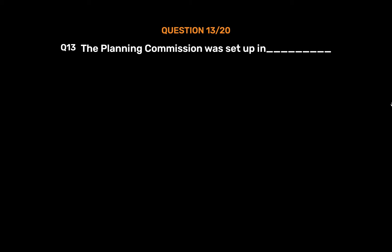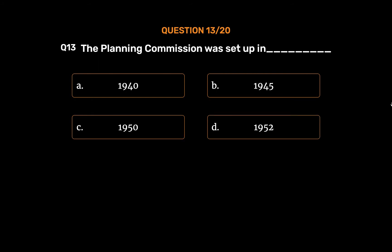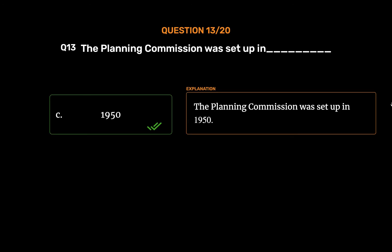Question 13: The Planning Commission was set up in _____. Options: A. 1940, B. 1945, C. 1950, D. 1952. The correct answer is Option C: 1950. The Planning Commission was set up in 1950.